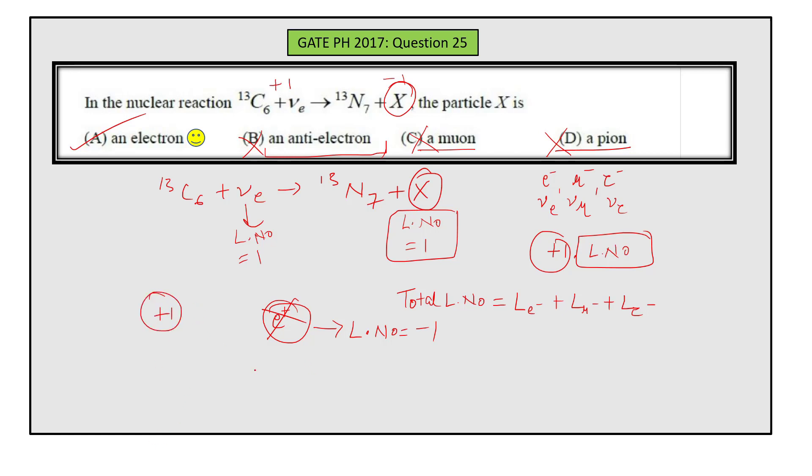Then we have electron which has plus one as lepton number value. Now if you place electron here for nitrogen, you will find that each quantity is conserved on both sides, from atomic number to mass number. That means electron is the correct answer. Thank you.